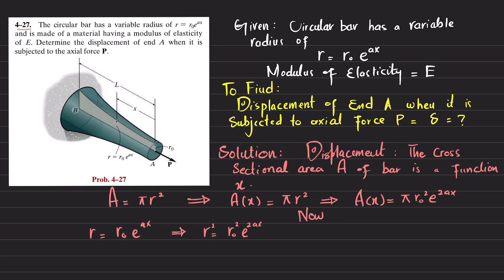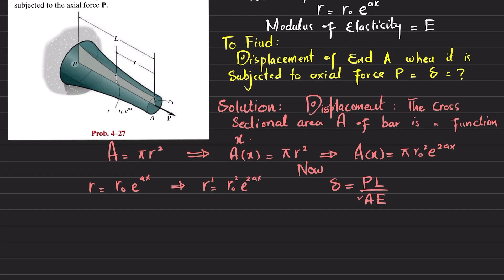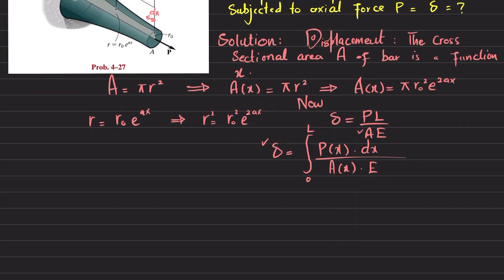The total elongation formula is δ = P·L / (A·E). Since A is a function of x, we find the total elongation by integrating: δ = ∫₀ᴸ P·dx / (A(x)·E). We take a small differential length dx and integrate over the total length L to get the total deflection at end A.